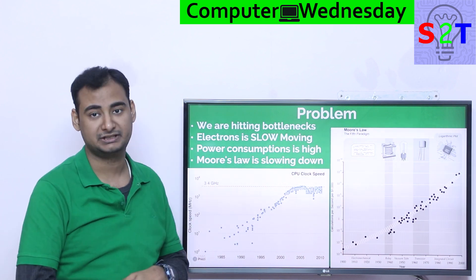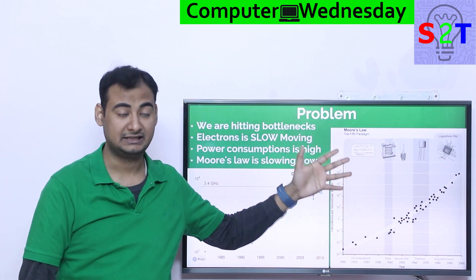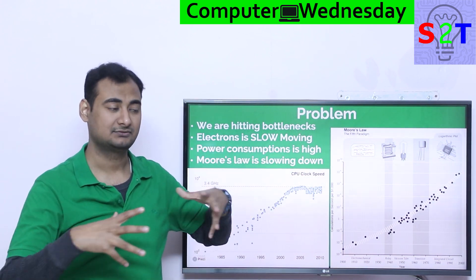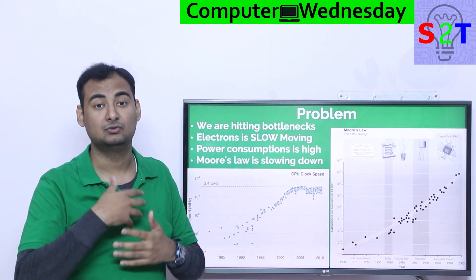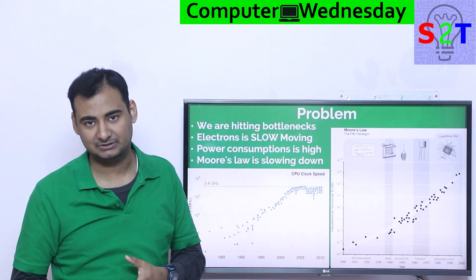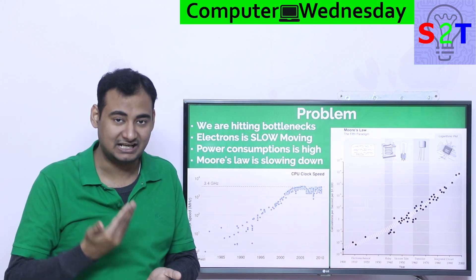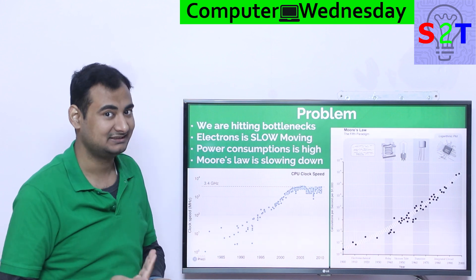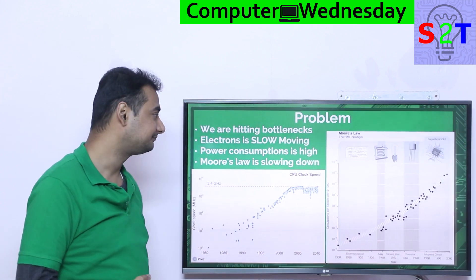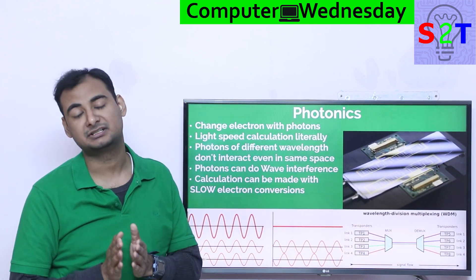Moore's Law was continuously projected and it has been going strong, and there is a very good reason for that — the better it goes, the more our industry expands, the more capable we become, and the more economic growth happens because of it. There is a lot of incentive to keep it going. It's not just a luxury, it's a necessity — people's livelihoods depend on it. So the fact that it's slowing down is a cause for alarm.